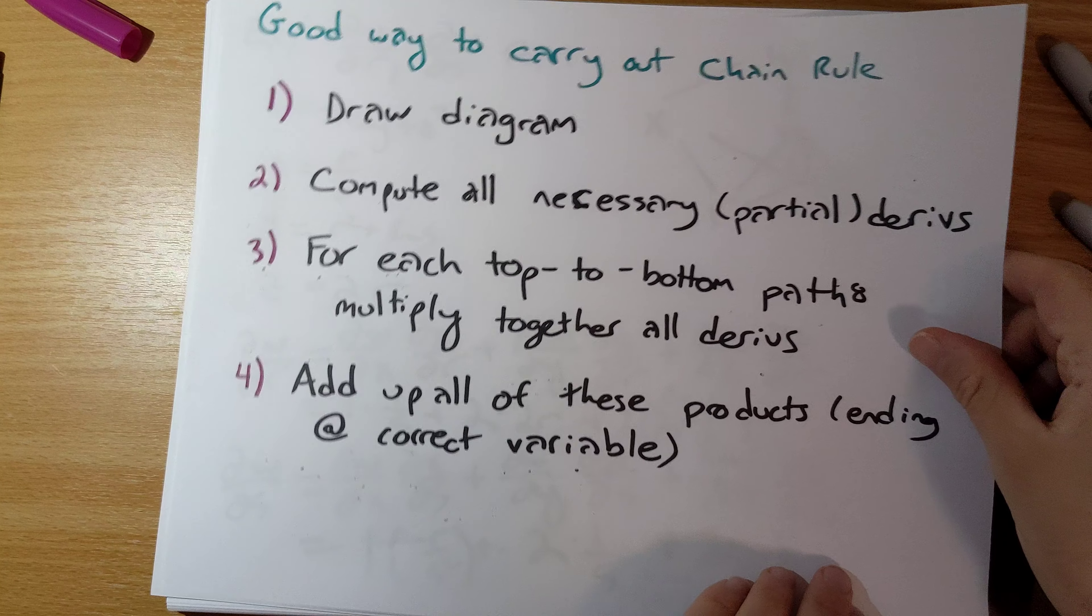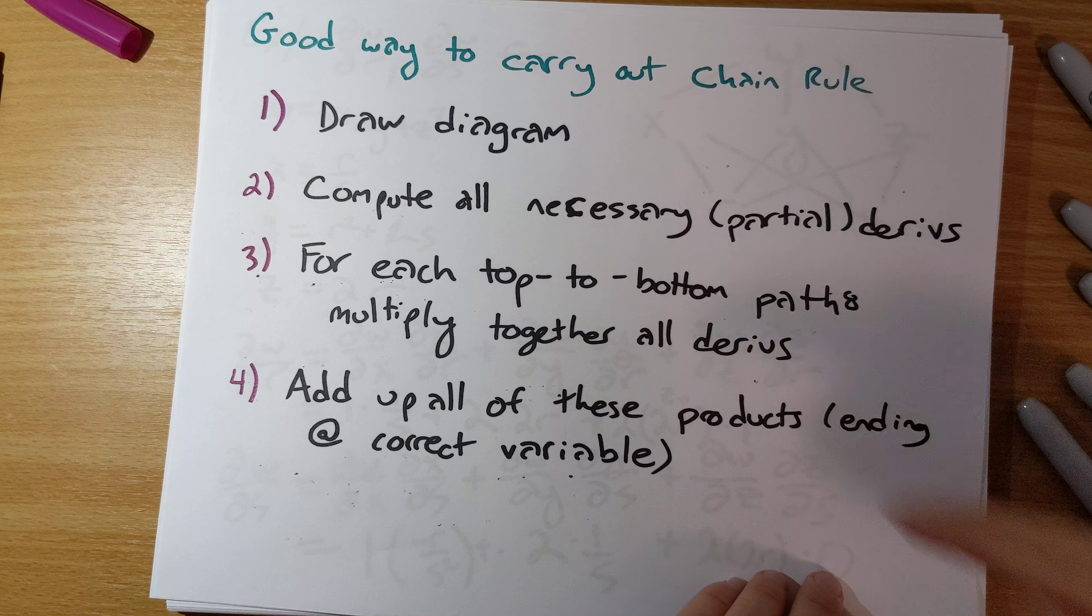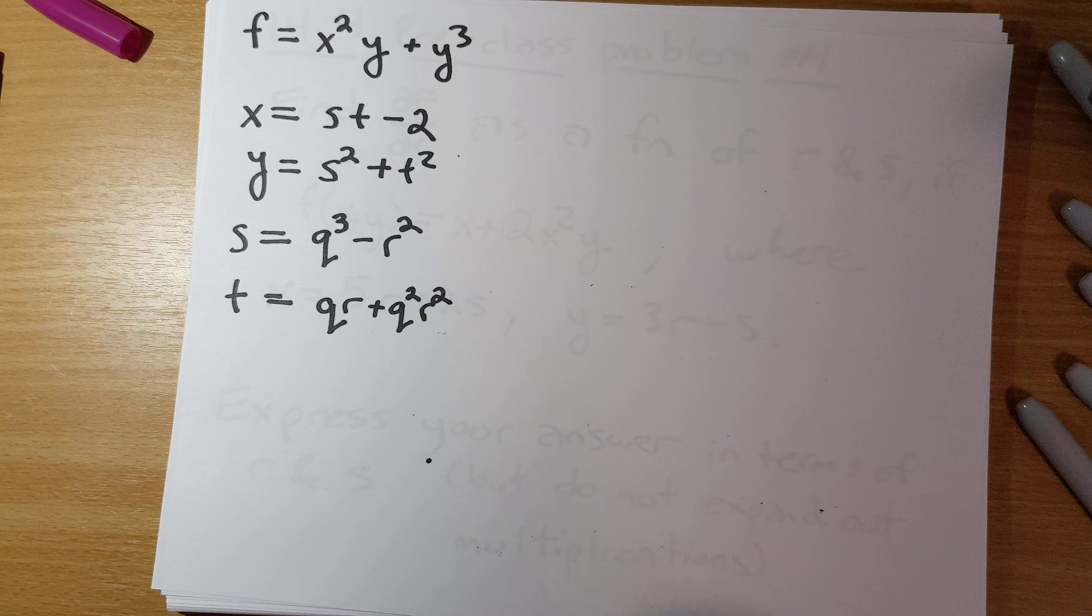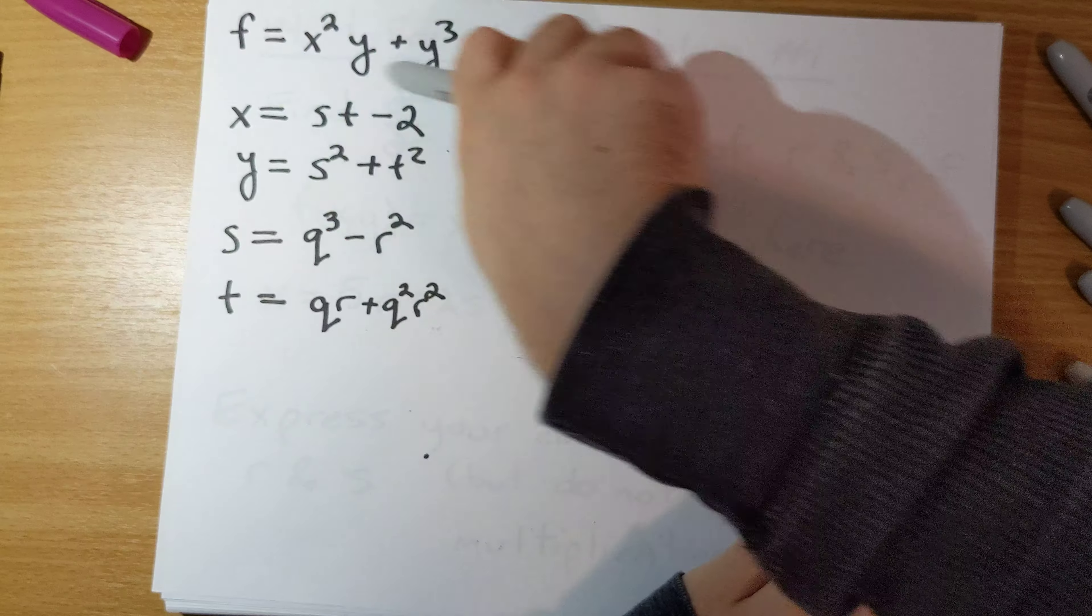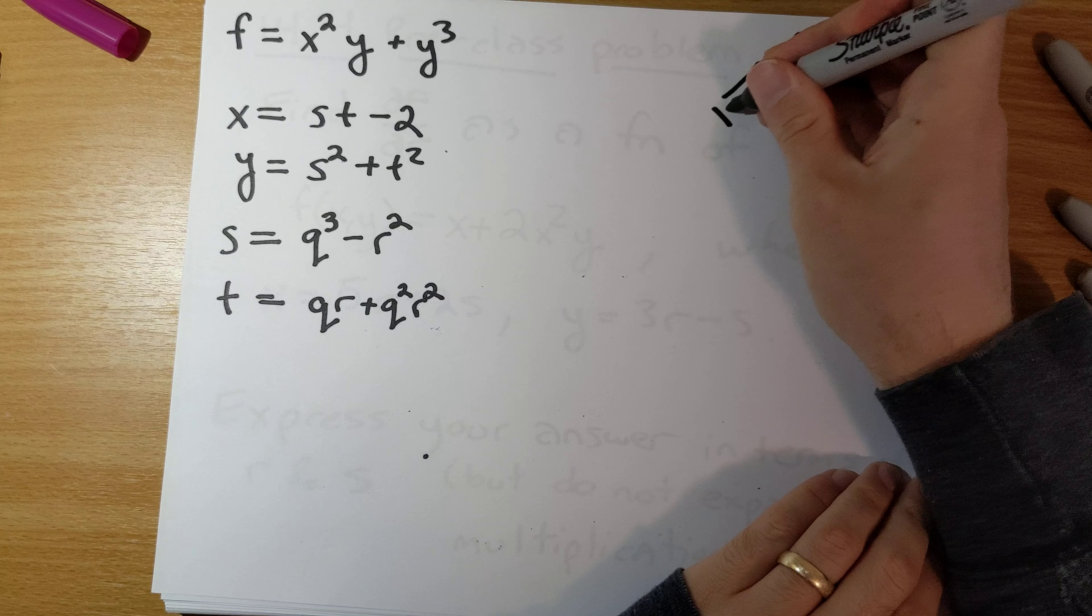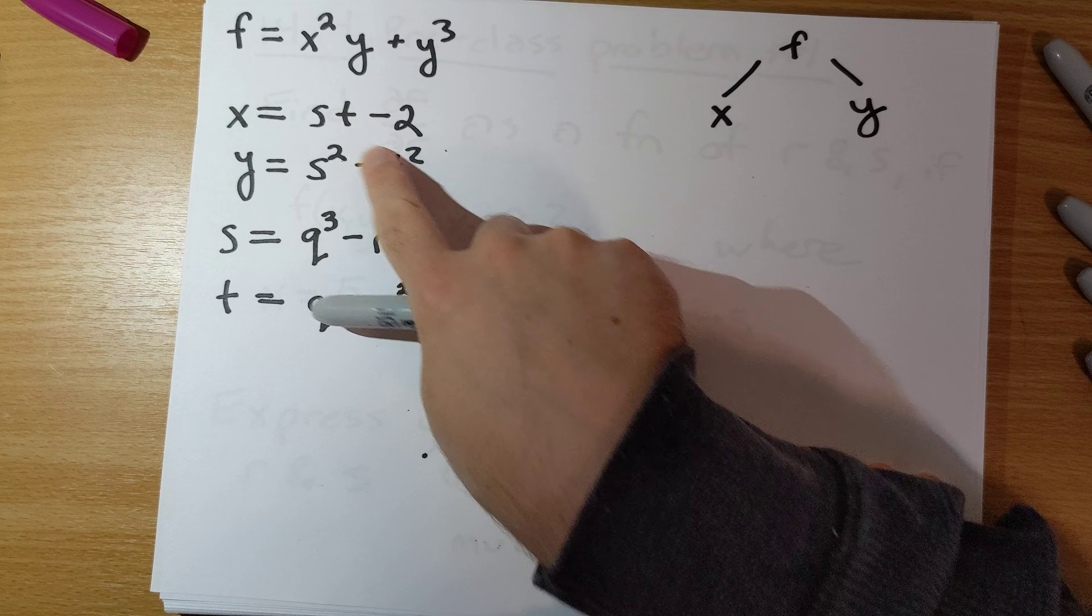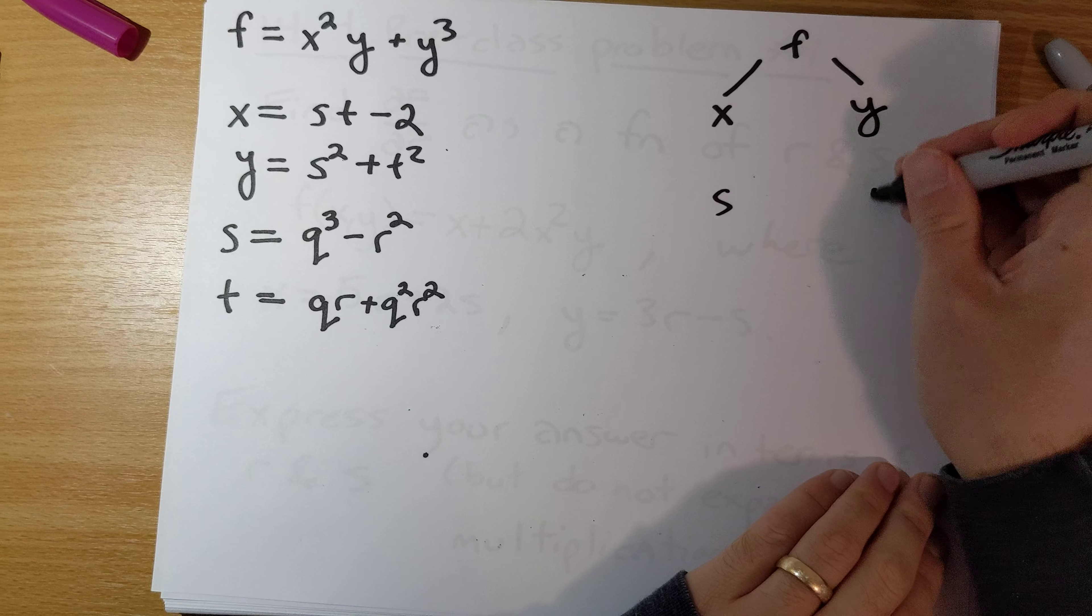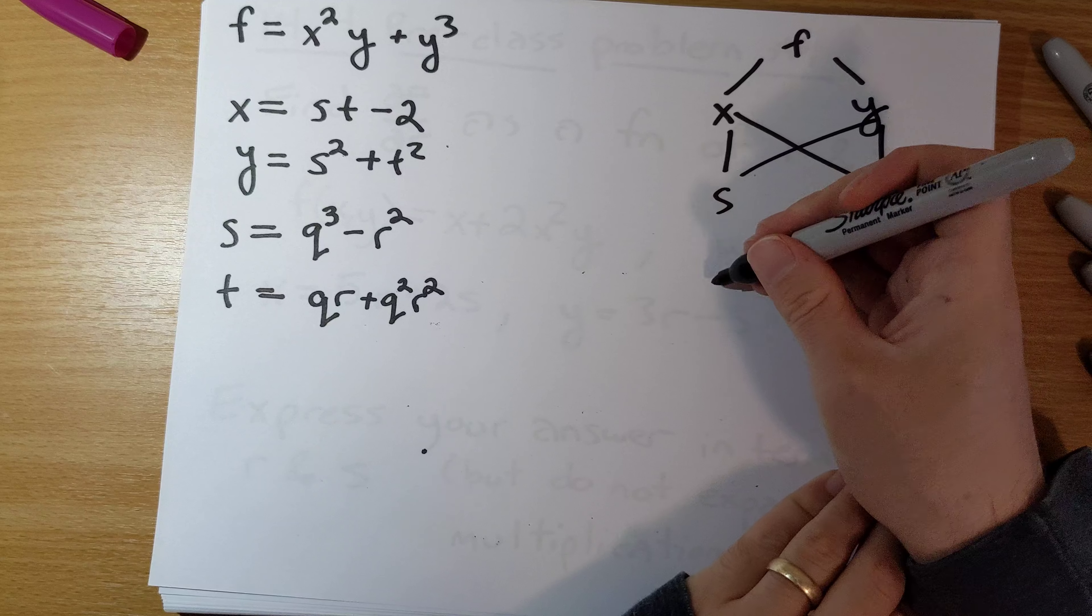One more further comment here about a good way to carry out the chain rule with diagrams here. It allows us to kick things up a further notch. So take a look here, f is a function of x and y, and x and y are both functions here of s and t, but s and t are functions of q and r.